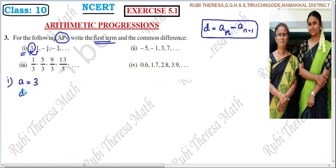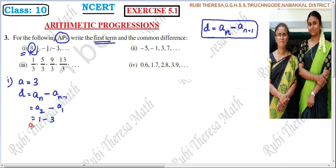And D — how do we find it? The common difference D equals A2 minus A1. So A2 minus A1: the second term is 1 and the first term is 3. So 1 minus 3 equals minus 2. So in the first sequence, the first term A equals 3, and the common difference D equals minus 2.